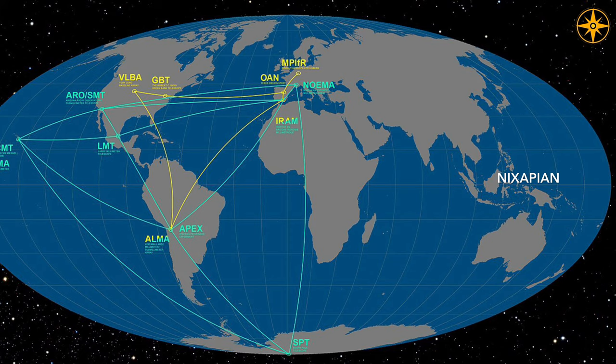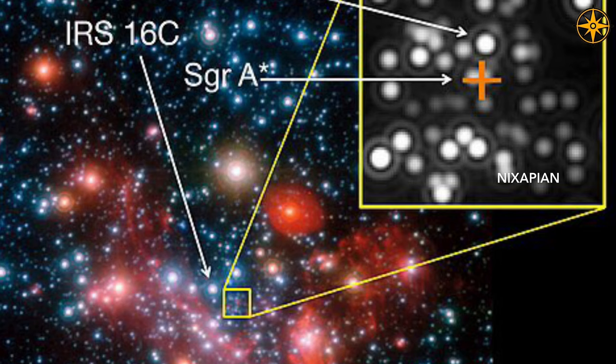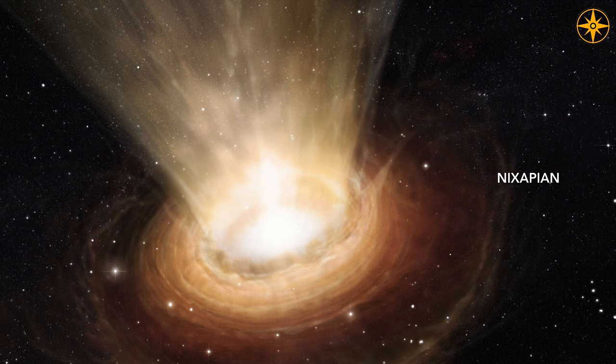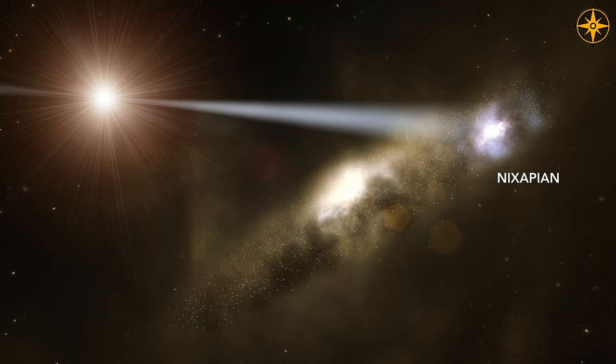They also observed the supermassive black hole at the center of the Milky Way galaxy, which is Sagittarius A star. This is much smaller, with a mass of 4 million suns, and it is much less active, meaning it periodically sucks up gases and dust.